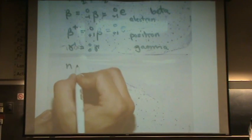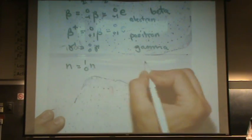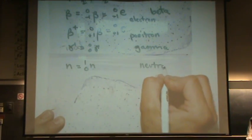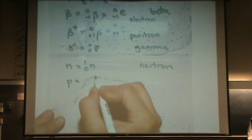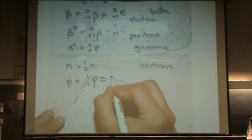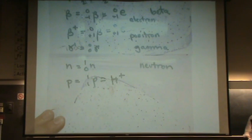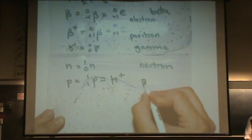And then the neutron is 1, 0, and then finally the proton, which is 1, 1, p, or as you've seen before in Chem 2b, the H plus, this is a proton.